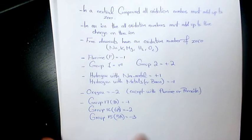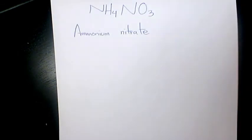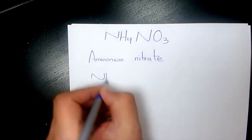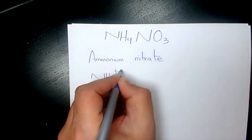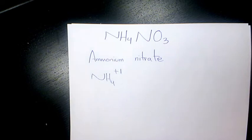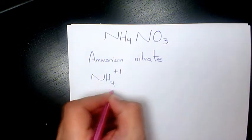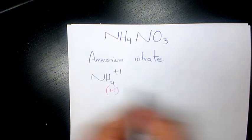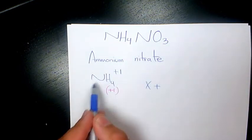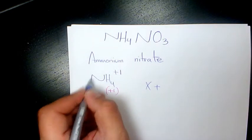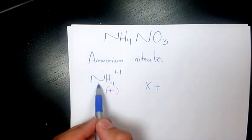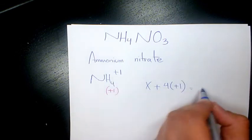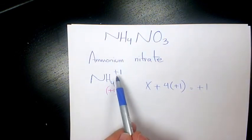So let's get into it. We know ammonium is NH4 plus one, so we have an ion here. Hydrogen is plus one, so it means that X, the oxidation number of nitrogen, plus four times plus one has to give us plus one because that's the charge of the ion.